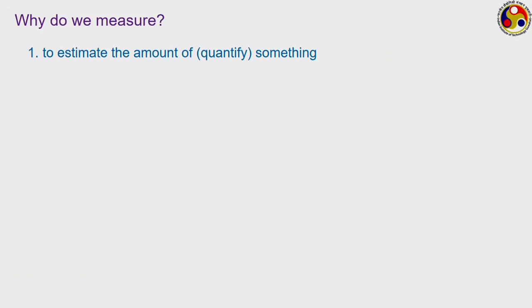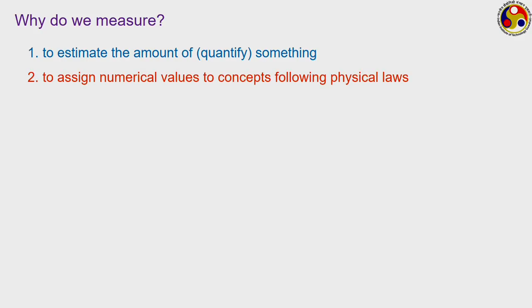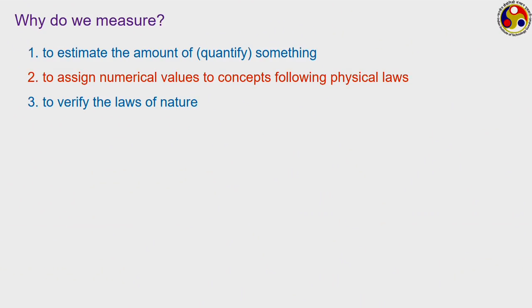We shall discuss in more detail about this particular transformation. But before that, why do we measure? The first reason is to estimate the amount or quantify something — we should get some numbers or numerals as the output. Some based upon physical laws, or even certain abstract things can be quantified in terms of numbers. When you get those numerals as the output, we call that a measurement — it can be something very physical like length or mass, or something very abstract like IQ of a person, but we should have some numerical representation.